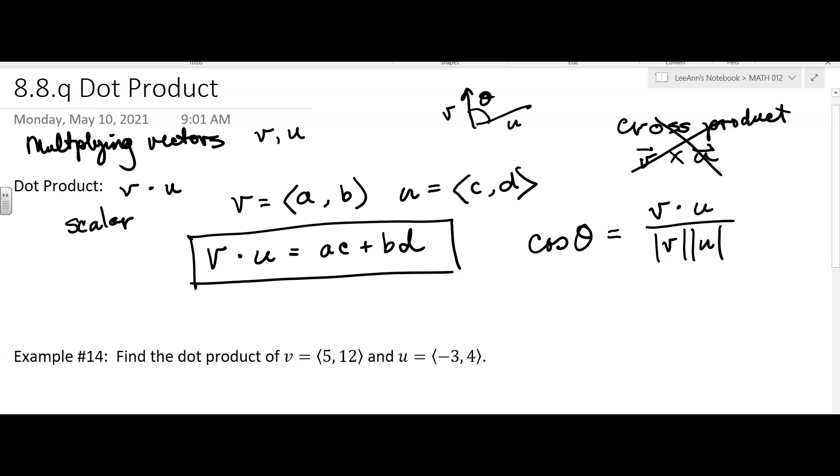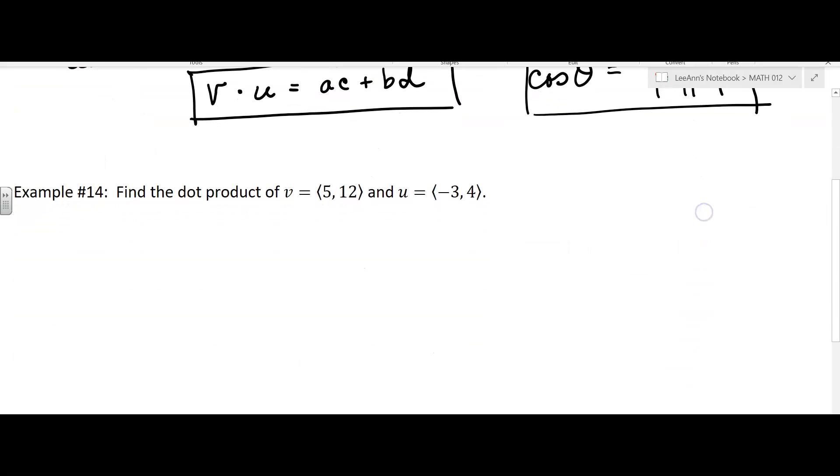We'll need this one in the next video. All right, so find the dot product. First we're just going to find the dot product. So the dot product V dot U is going to equal 5 times negative 3 plus 12 times 4.